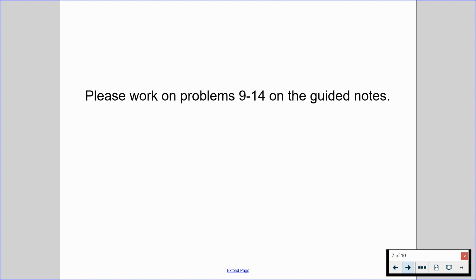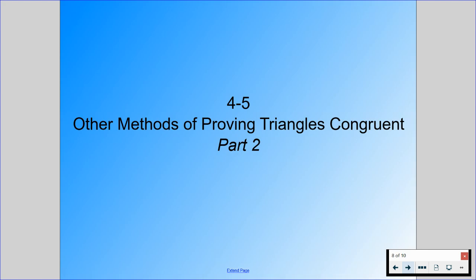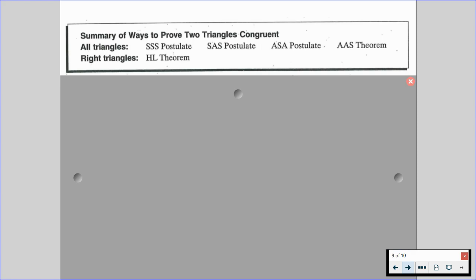So now, once you're done with part 1, we're going to start talking about part 2. And part 2 is really just a summary. So we're going to be talking about a summary of ways to prove two triangles to be congruent. So again, for general triangles, we have side-side-side postulate, side-angle-side postulate, angle-side-angle postulate, and angle-angle-side theorem. For right triangles, we can use the HL theorem. Remember, there is no ASS and there is no SSA. The only time side-side-angle works is for hypotenuse-leg.